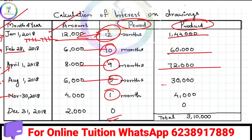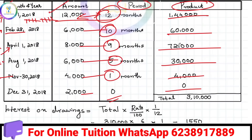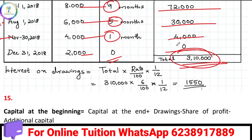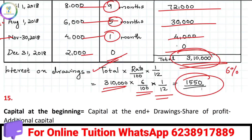Now for the product column: 1000 × 5 = 30,000 and 4000 × 1 = 4,000. We need to add all the products to get 3,100,000. Then we apply the formula: 6 divided by 100, multiplied by 1 divided by 12, to get the interest on drawings.